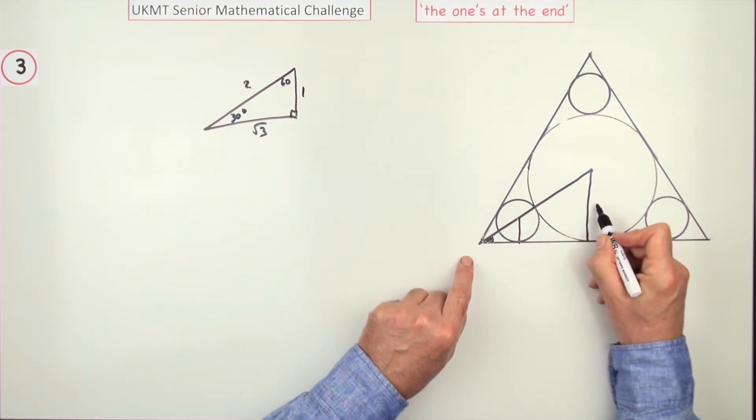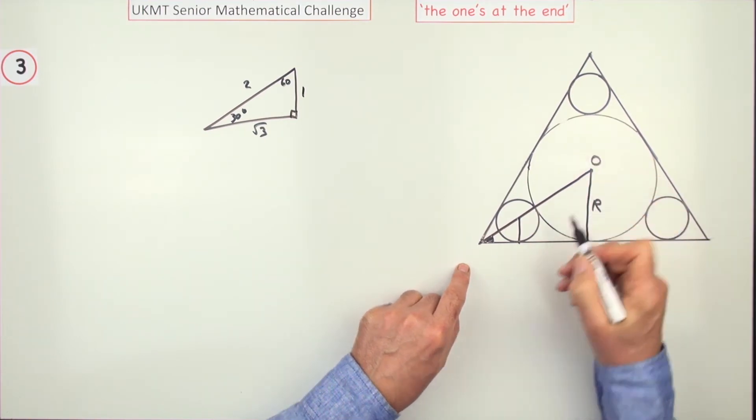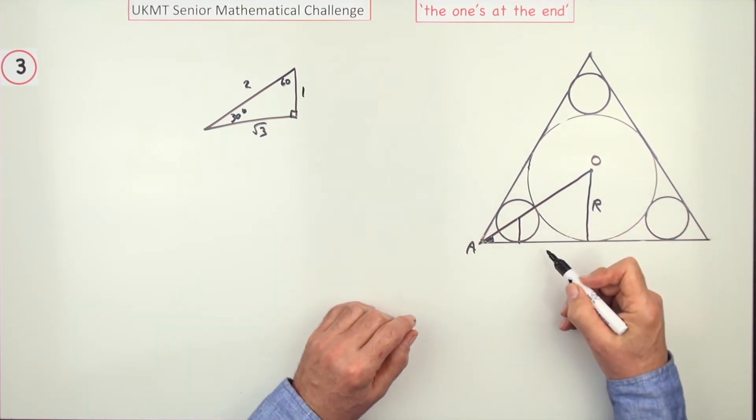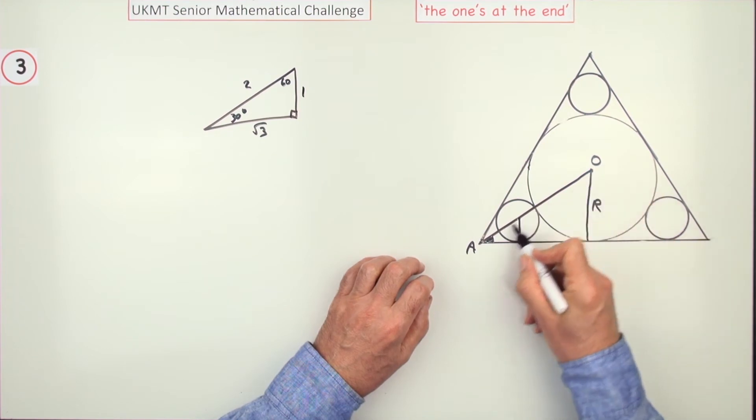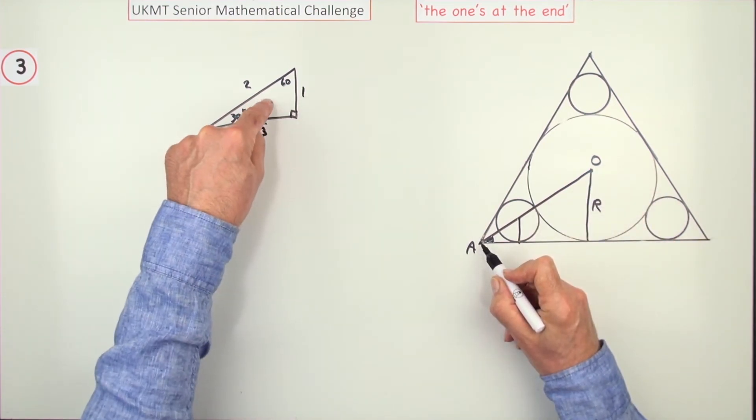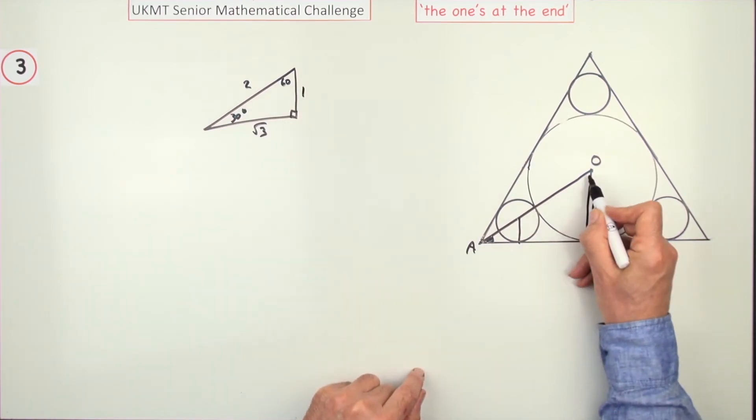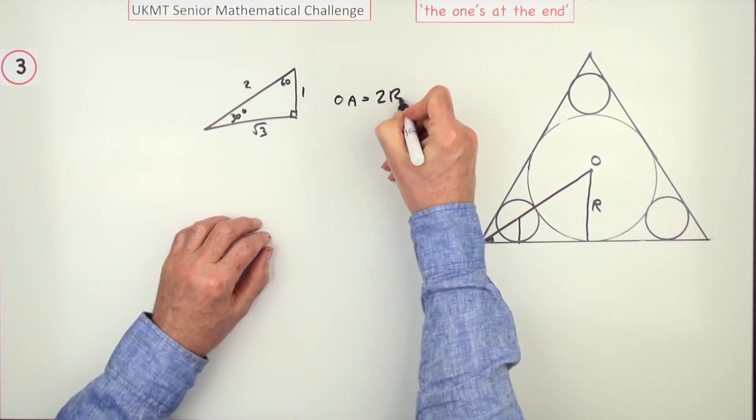Then, putting them back into this, if that distance is r, that means the distance from the centre to this point, I'll just call it OA, although you don't actually need to give it any names if you're just doing it yourself quickly for a multiple choice. Then, that distance must be, comparing to this one, that hypotenuse is twice the shortest side, that must be 2r. I'll just take a note of that. OA equals 2r.